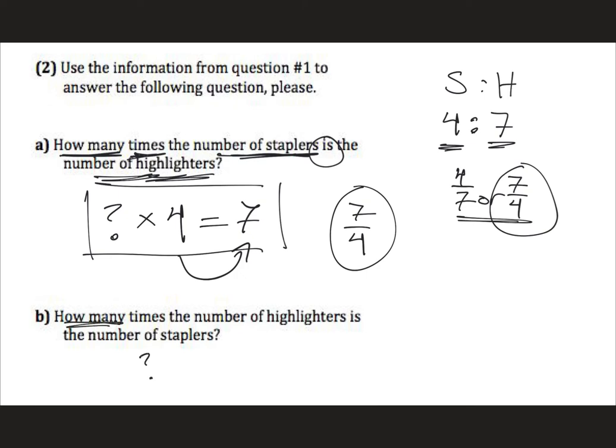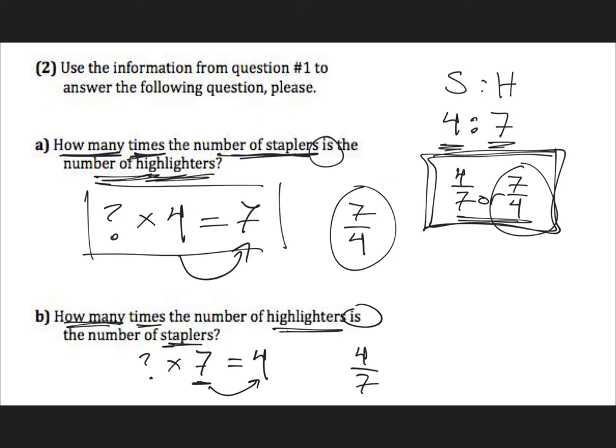Okay, let's look at the next one. How many, we're going to put a question mark, times the number of highlighters, which is seven, equals the number of staplers, which is four. So once again if we have to guess we're either going to guess four sevenths or seven fourths but we're not going to guess. This time we're trying to take the bigger number and turn it into something smaller, turn into a four. So we need to multiply by a number less than one which would be four sevenths.